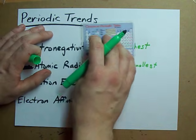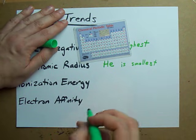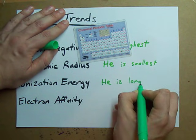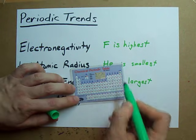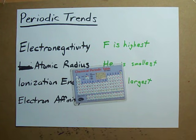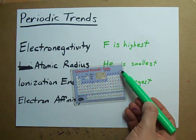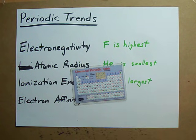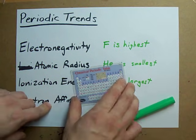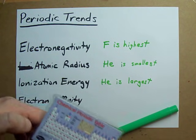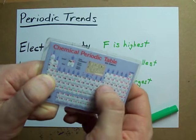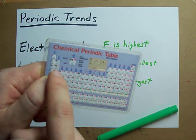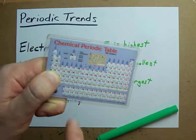For ionization energy, He has the largest ionization energy — it takes a lot of energy to remove an electron from that. It doesn't take a whole lot to remove it from down here. So if you were asked about the ionization energies of, say, calcium and aluminum, calcium is going to give up its electron easier and will have a lower ionization energy.